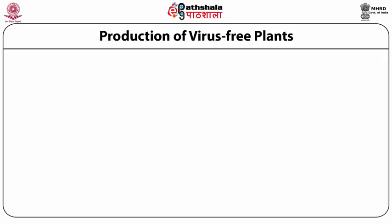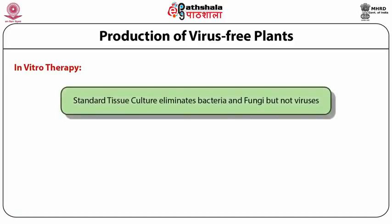High temperature and high humidity during thermotherapy promotes infestation by insects. Therefore, in vitro therapy has become very important. Standard tissue culture eliminates bacteria and viruses because you surface sterilize the tissue before you culture. If there is a fungus or bacteria persisting, it becomes visible and you can discard those cultures. But viruses don't become visible, yet they cause losses.